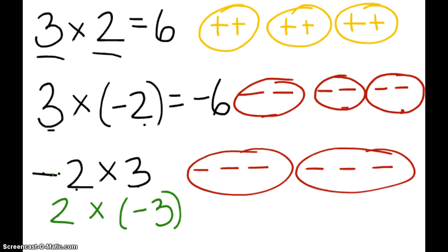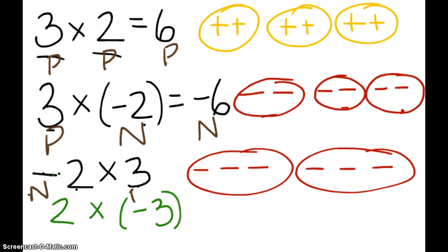So notice: a positive number times a positive number equals a positive. A positive times a negative is a negative. A negative number times a positive number is also a negative number. Negative times a positive is a negative.